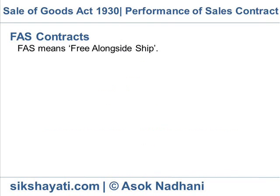FAS contracts. FAS means Free Alongside Ship. In FAS contract, the property in goods passes from the seller to the buyer immediately when the goods are delivered at the port named by the buyer for shipment.